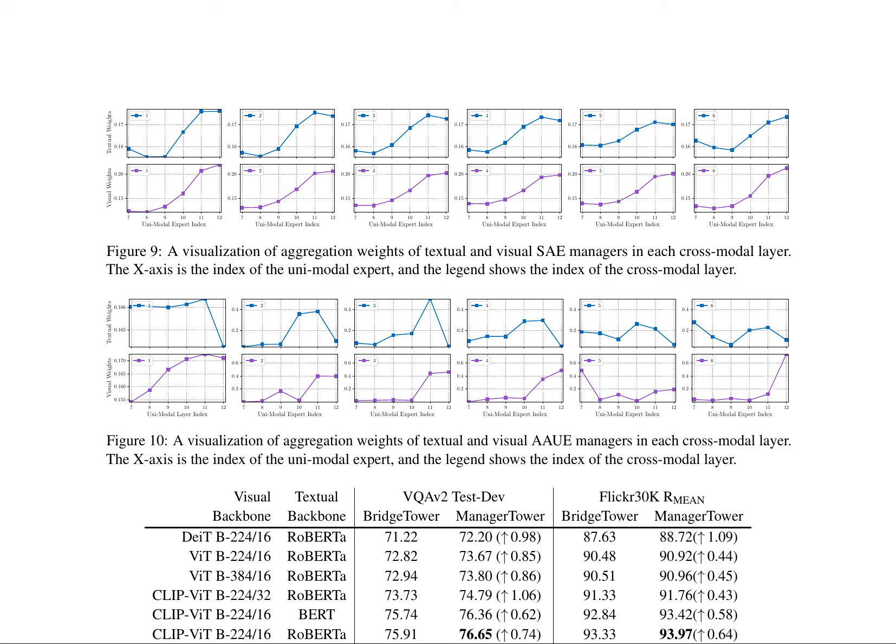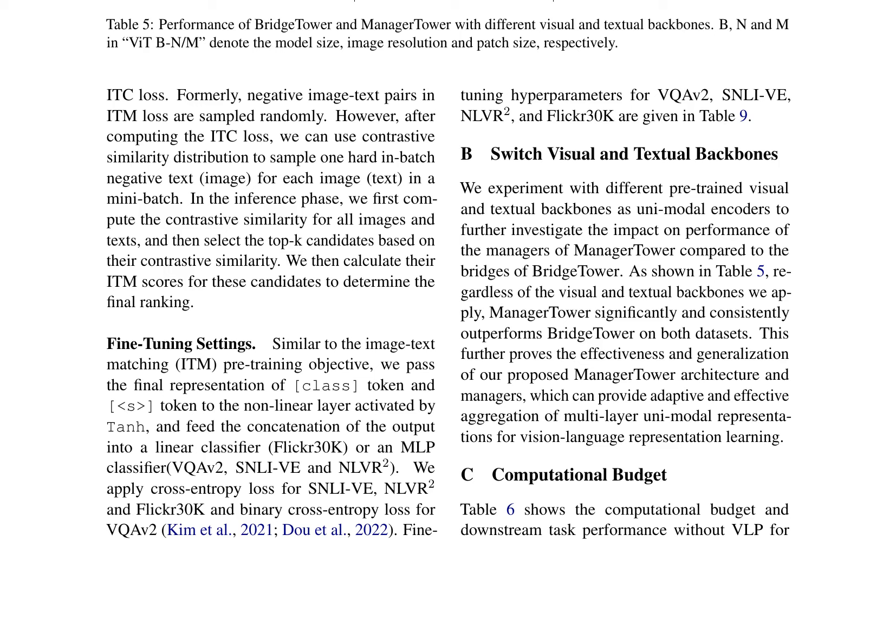The authors visualize the aggregation weights of textual and visual managers in each cross-modal layer, showing that the Manager Tower architecture can provide adaptive and effective aggregation of multi-layer unimodal representations for vision language representation learning. They also experiment with different pre-trained visual and textual backbones as unimodal encoders, demonstrating the effectiveness and generalization of the Manager Tower architecture. The results show that Manager Tower significantly and consistently outperforms BridgeTower on both datasets.